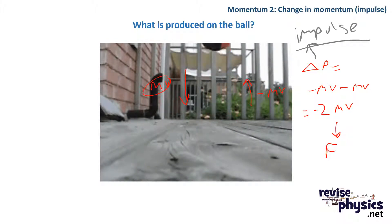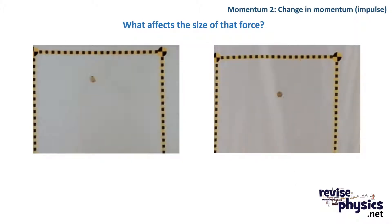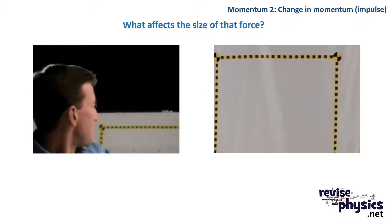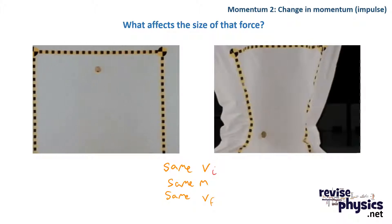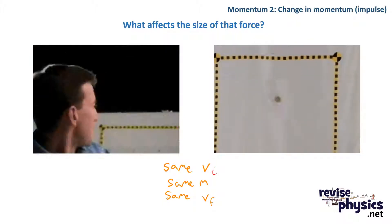We call that change in momentum an impulse. Here we've got two eggs being thrown at two different walls. One is a solid wall, and on the right we have a sheet. Now both the eggs have got the same initial velocity, the same final velocity, and the same mass.